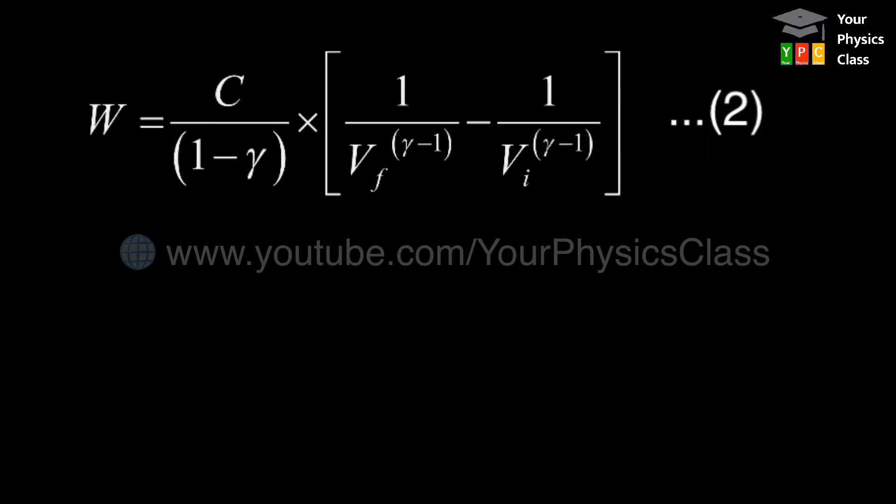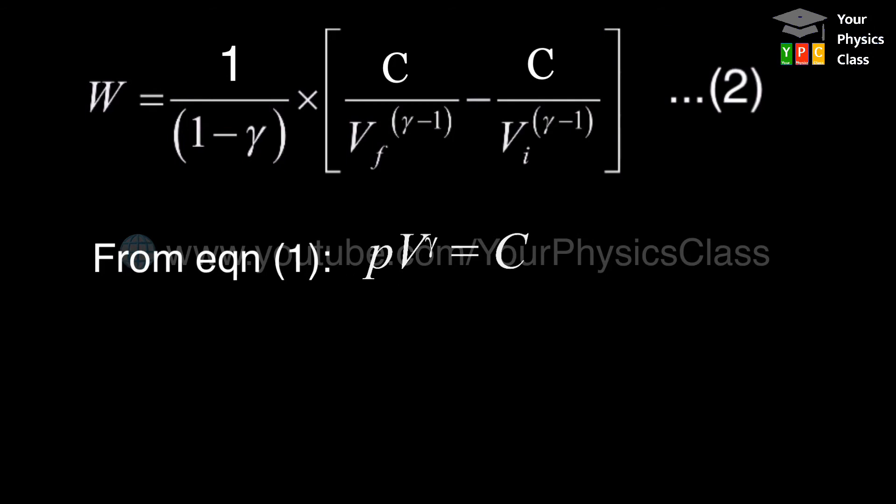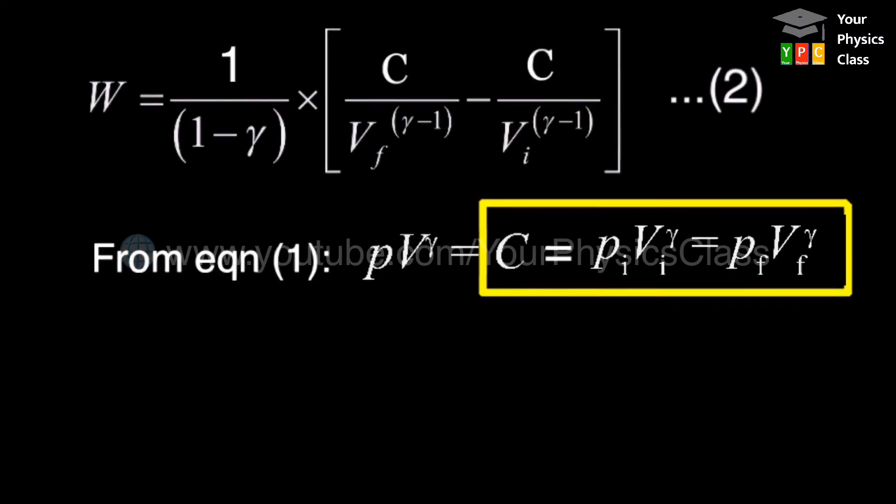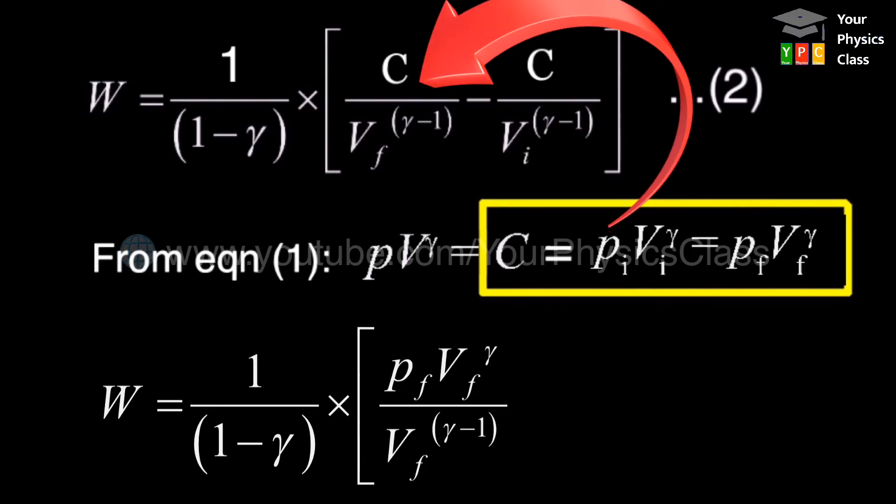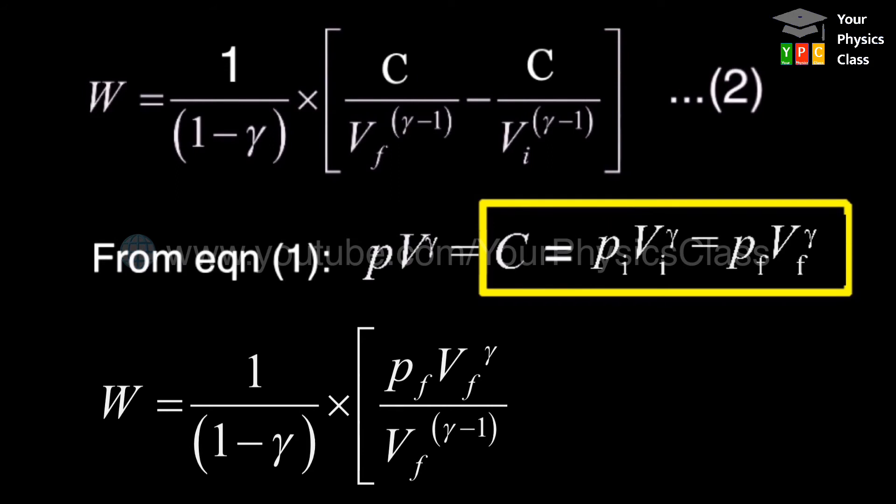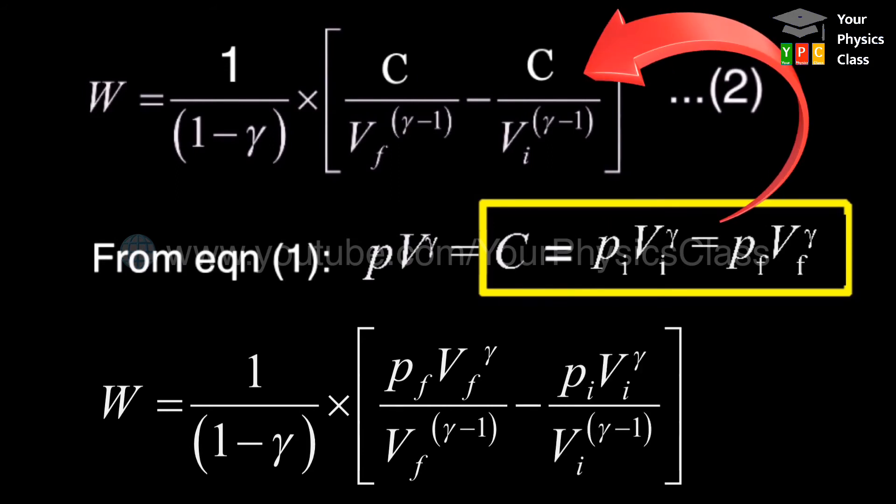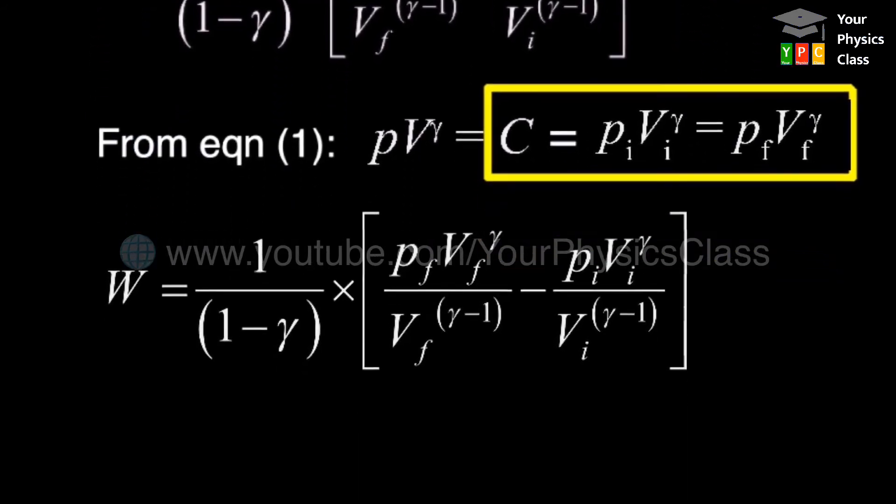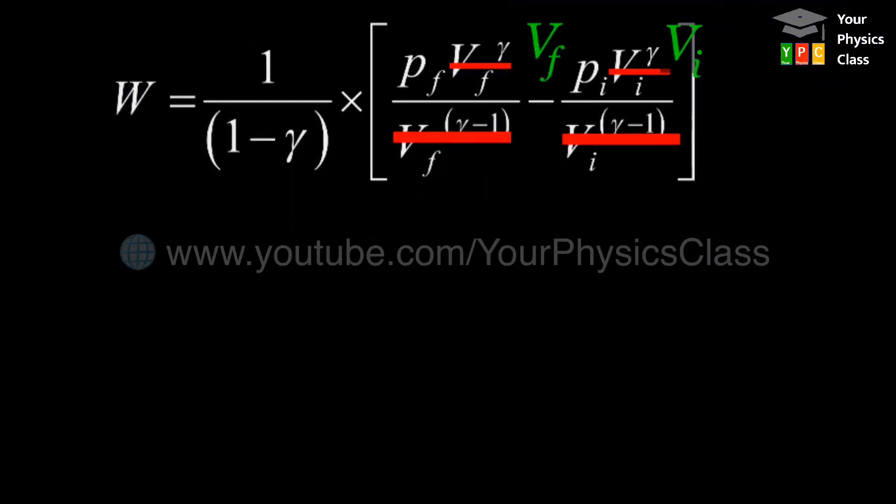From equation 1, we have PV to the power gamma is constant, so we may write C equals Pi Vi to the power gamma equals Pf Vf to the power gamma. Substituting this value of C in the above equation, we make it W equals 1 upon 1 minus gamma times in bracket Pf Vf to the power gamma divided by Vf to the power gamma minus 1 minus Pi Vi to the power gamma divided by Vi to the power gamma minus 1. Cancelling like terms in numerator and denominator, we get the equation as shown on your screen.